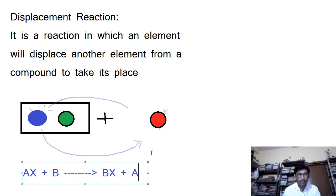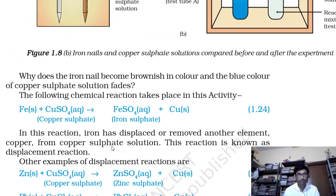A very nice example of this kind of reaction is in your NCERT book. Iron reacts with copper sulphate, and due to this reaction iron will displace copper from copper sulphate, giving you iron sulphate and copper.